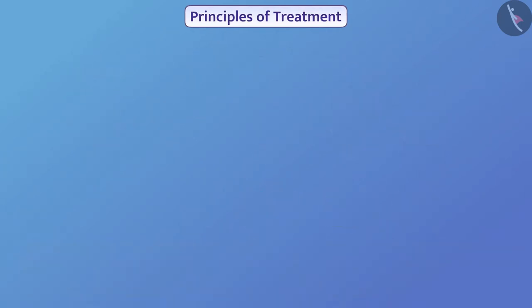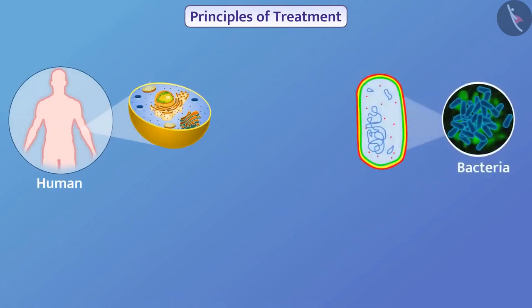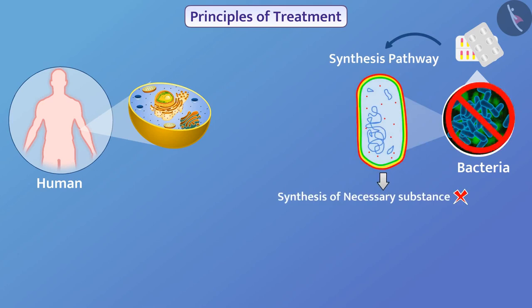For example, the processes in human cells and the processes in bacteria are different. Therefore, to kill infectious bacteria, medicines are used that only block the synthesis pathway of bacteria. Due to this, bacteria cannot synthesize the necessary substances for life, and therefore bacteria do not grow and die.